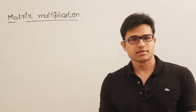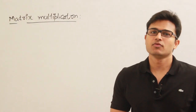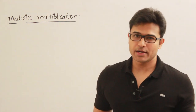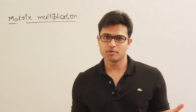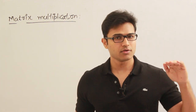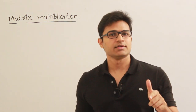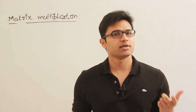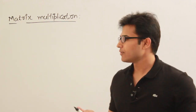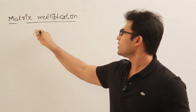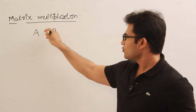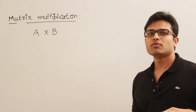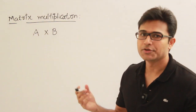We can multiply two matrices only if they are conformable for multiplication. Just like addition — we can add two matrices only when they are addition conformable, meaning they are of the same size — here with multiplication it is a bit different.